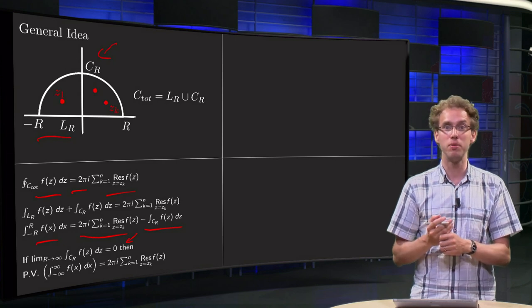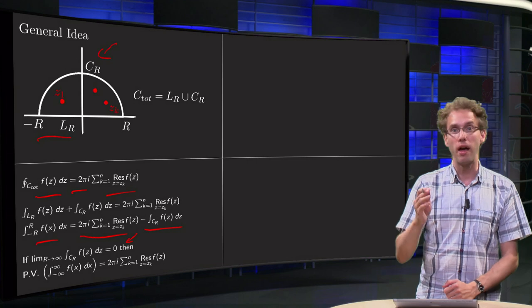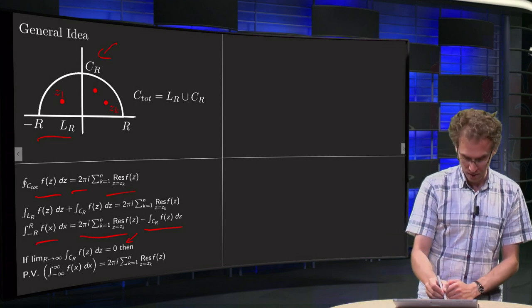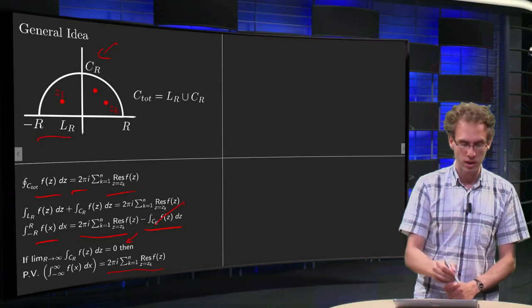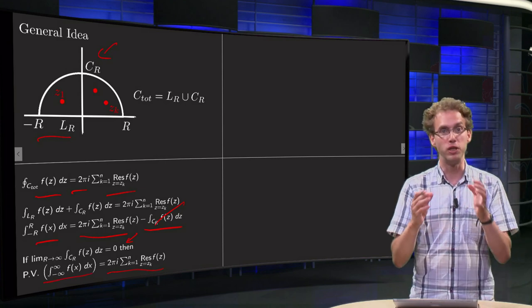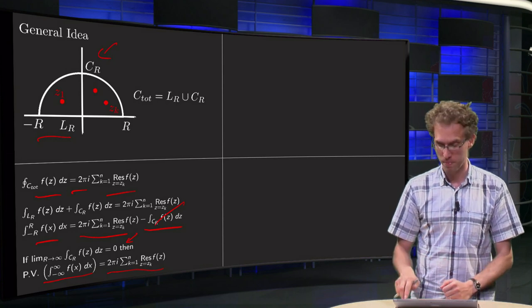then you can take the limit R to infinity on the left and right hand side. The integral here on the right hand side will cancel out. Here you have some number which you can compute. And on the left hand side you get the principal value of your real integral, which is the value you are looking for.